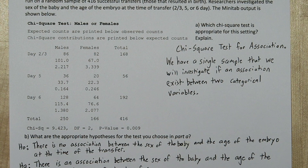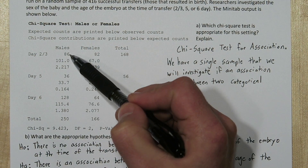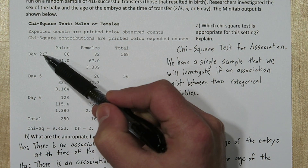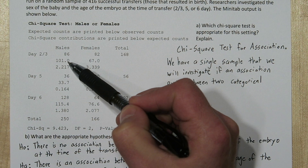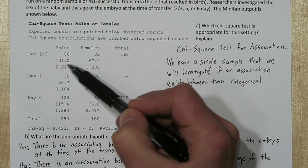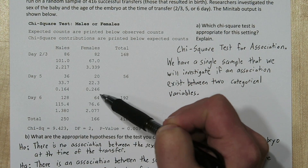Now before we draw a conclusion, let's look at our computer output and see what it gives us. Each cell in the computer output actually has three rows. This is our observed count — so there were 86 males born who were 2-3 days old when they were transferred as embryos. This is our expected count, and this is our contribution to the chi-square test statistic. So we have that for each of the six cells in our table.